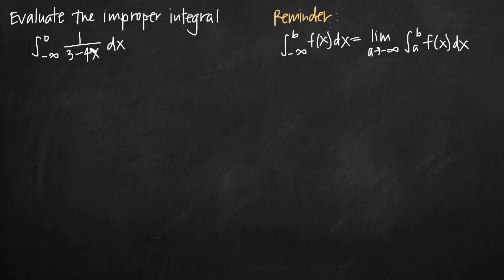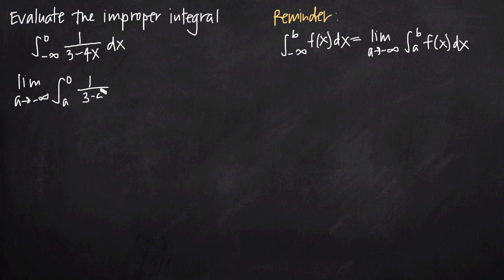Before we evaluate the integral, we swap out the lower limit of integration for a. So we convert this to the limit as a goes to negative infinity of the integral from a to 0 — we leave the 0 constant but replace negative infinity with a — of 1 over 3 minus 4x dx. We've used this formula to convert the improper integral to a new format where negative infinity is removed from our limits of integration.